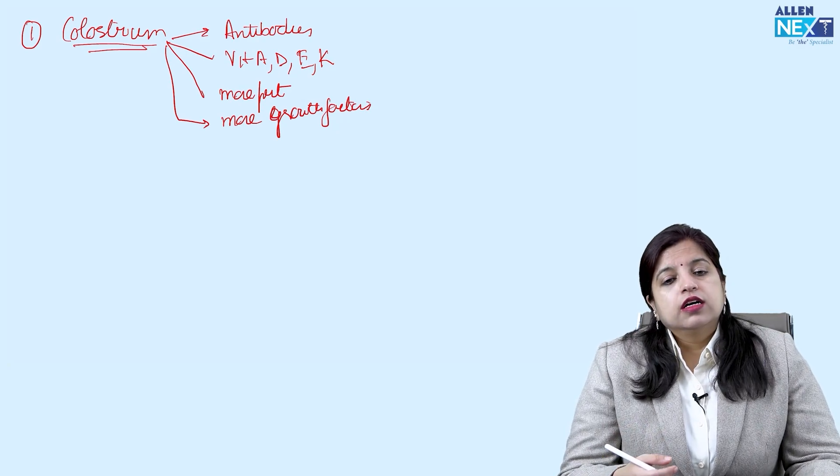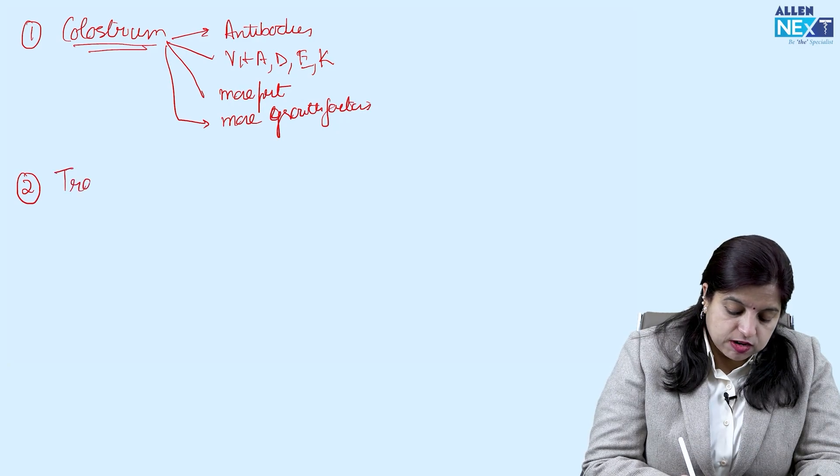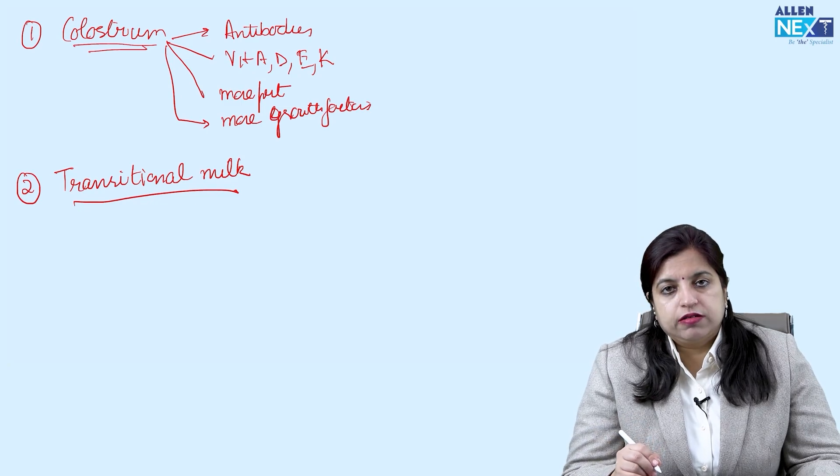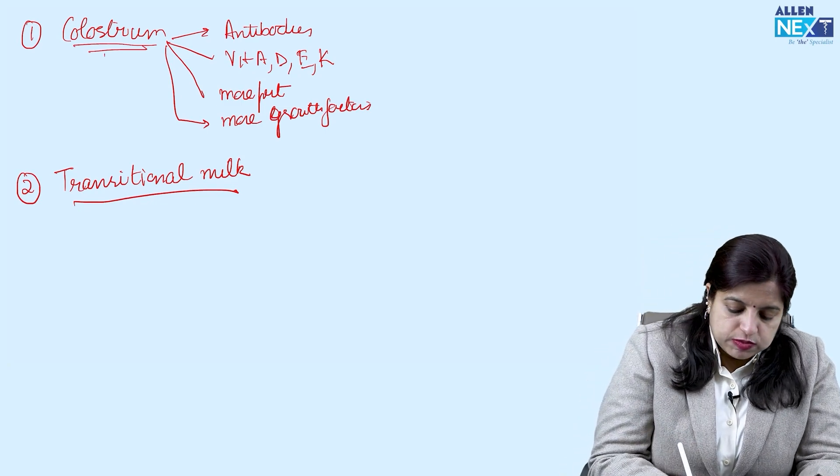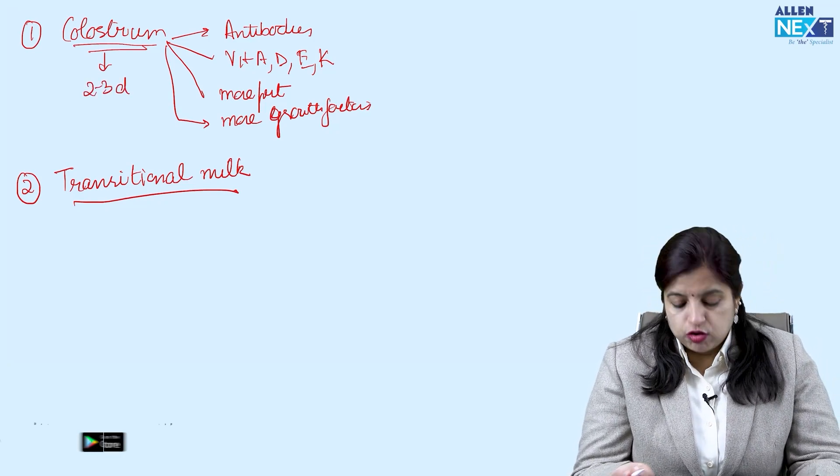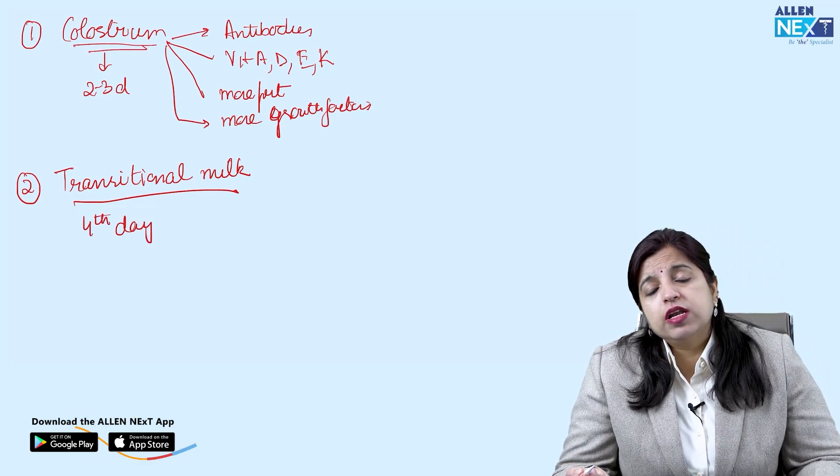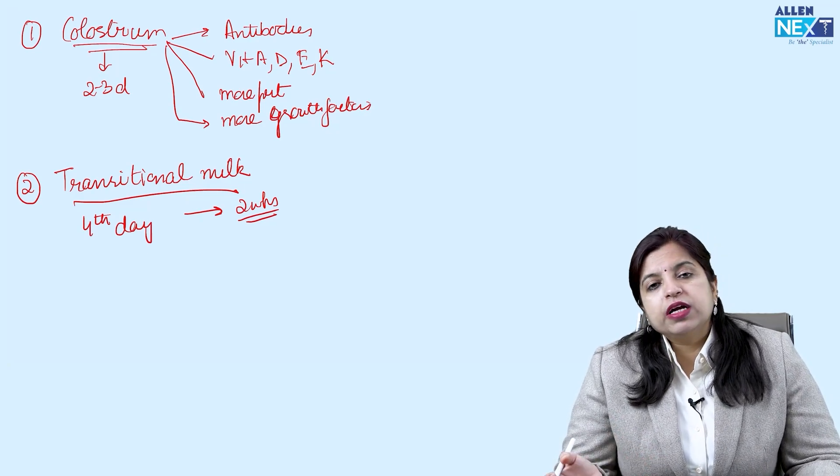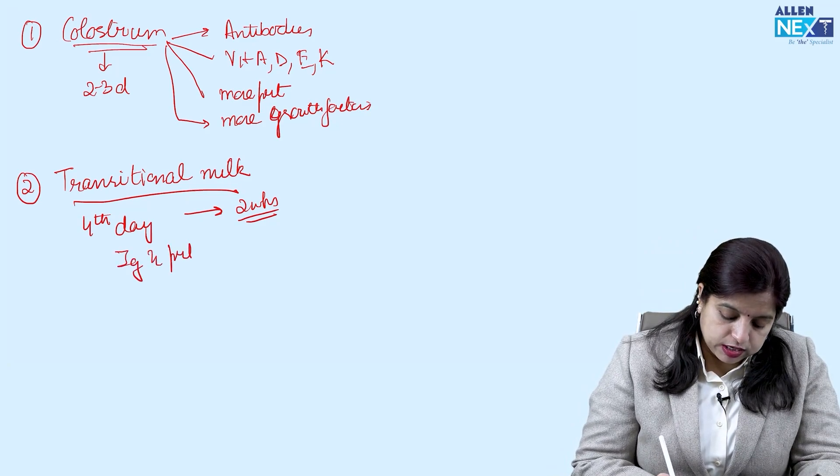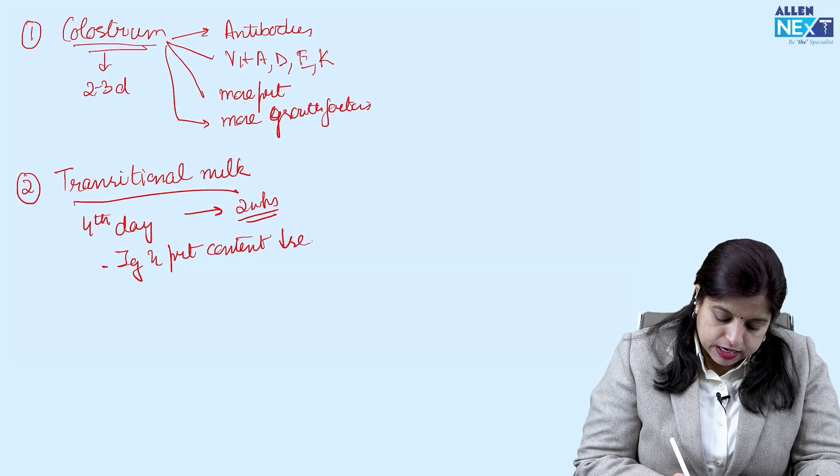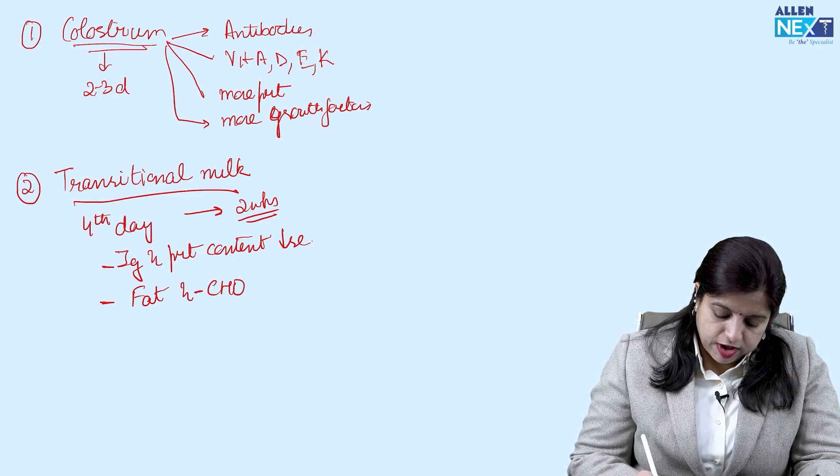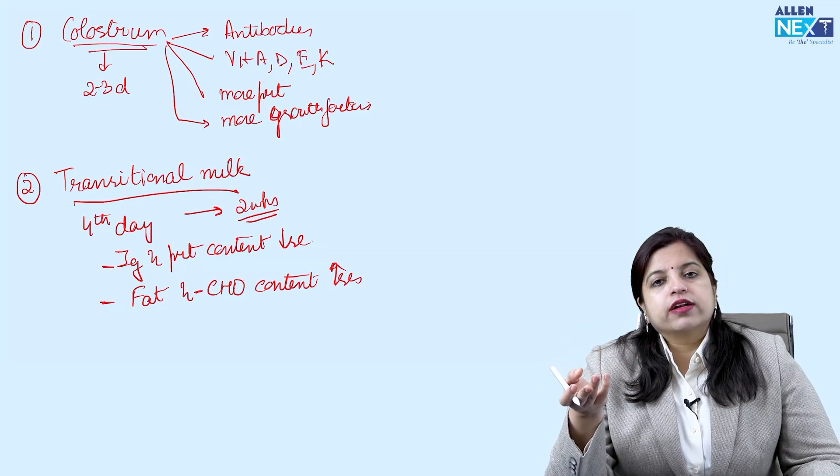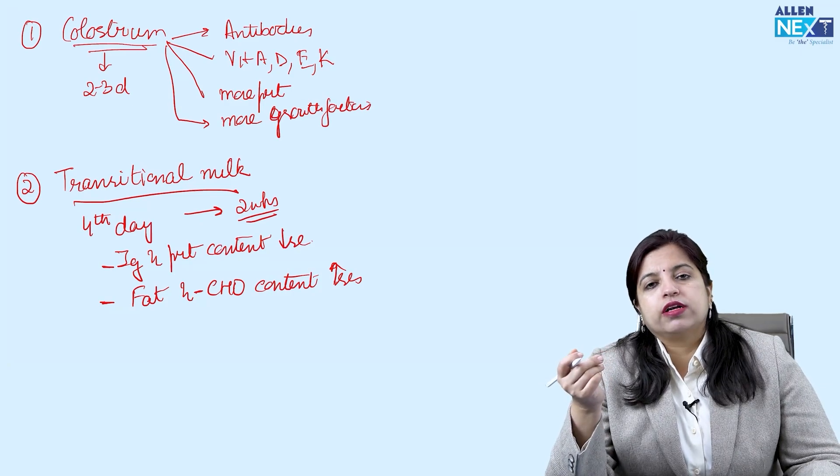Then after three days, we get to see another type of milk known as the transitional milk. This is basically a milk which is somewhere between the colostrum and the mature milk. This is secreted after three to four days, on the fourth day onwards. Secretion of transitional milk continues for around two weeks before it is replaced by mature milk. In the coming two weeks, the immunoglobulin and the protein content will now decrease, and what increases is the fat and the carbohydrate content. The carbohydrate content refers to lactose, that is the main carbohydrate.